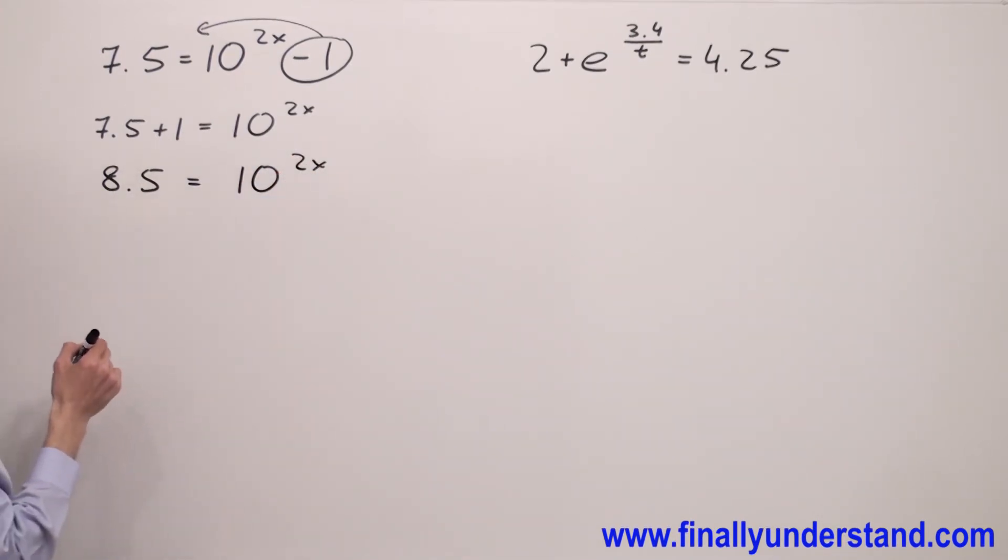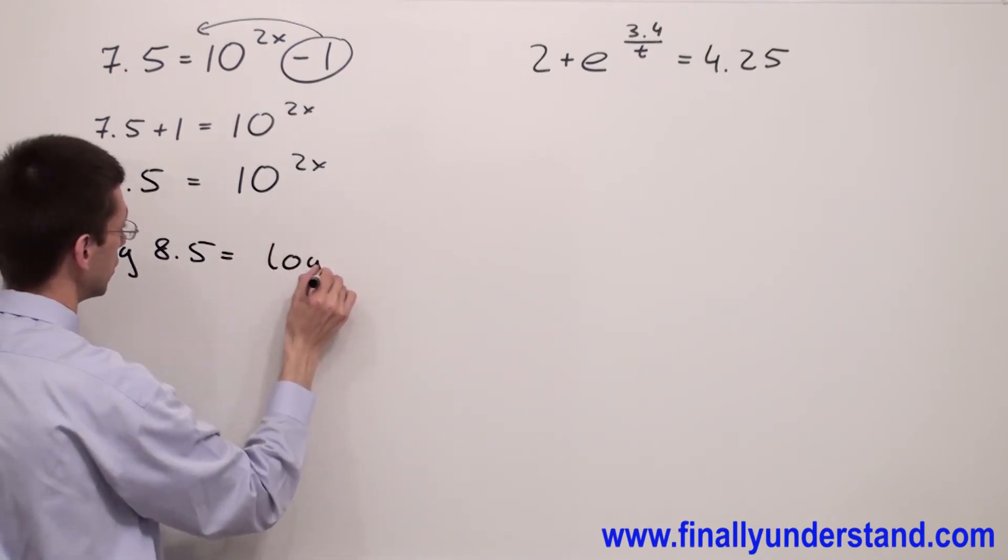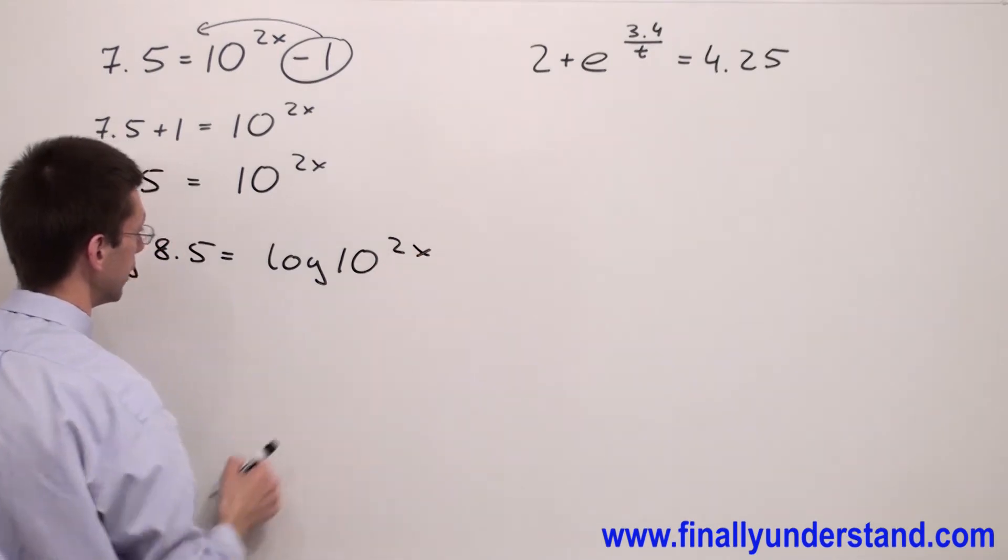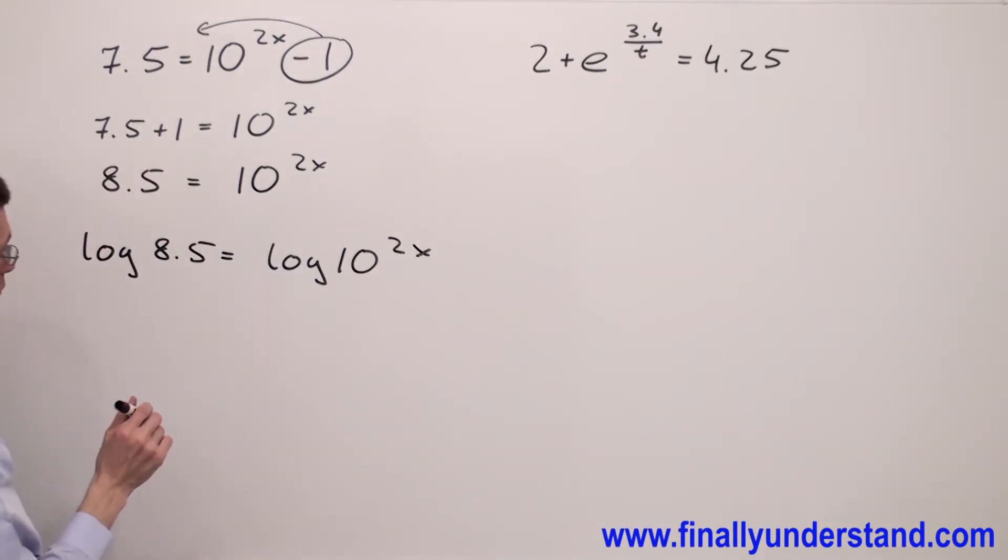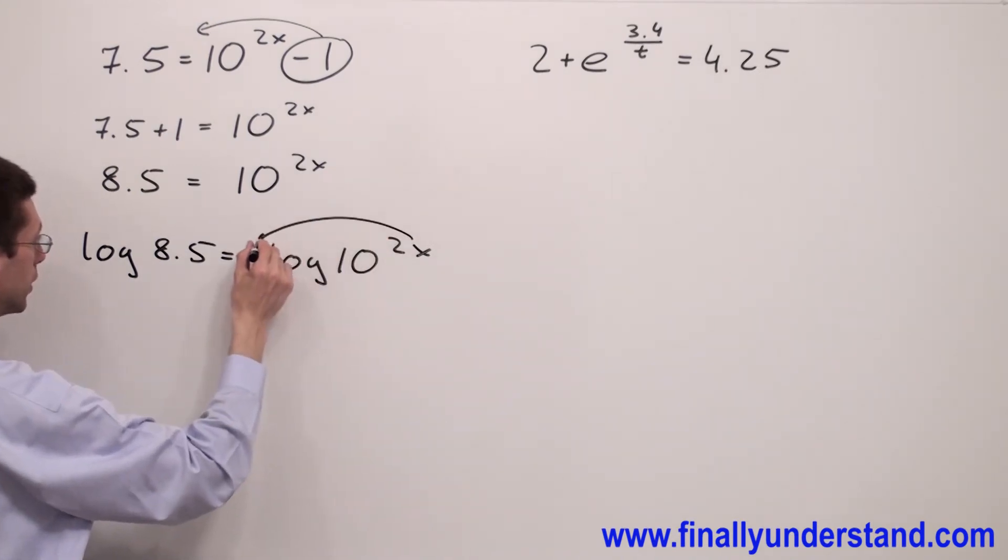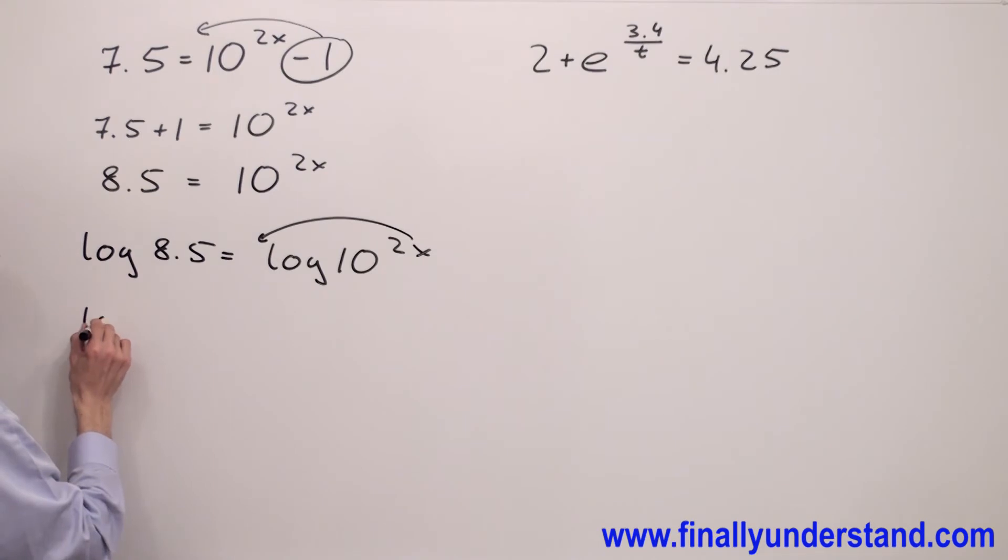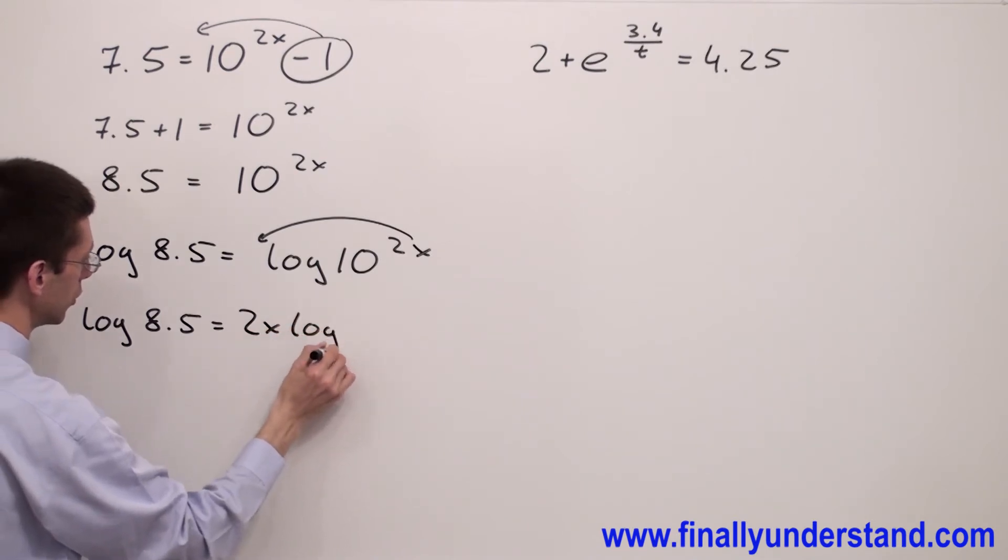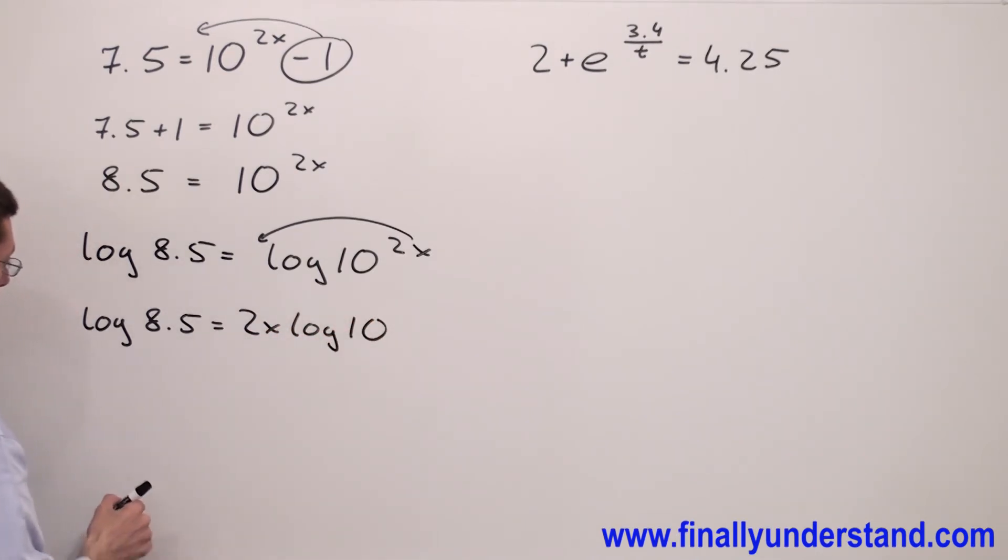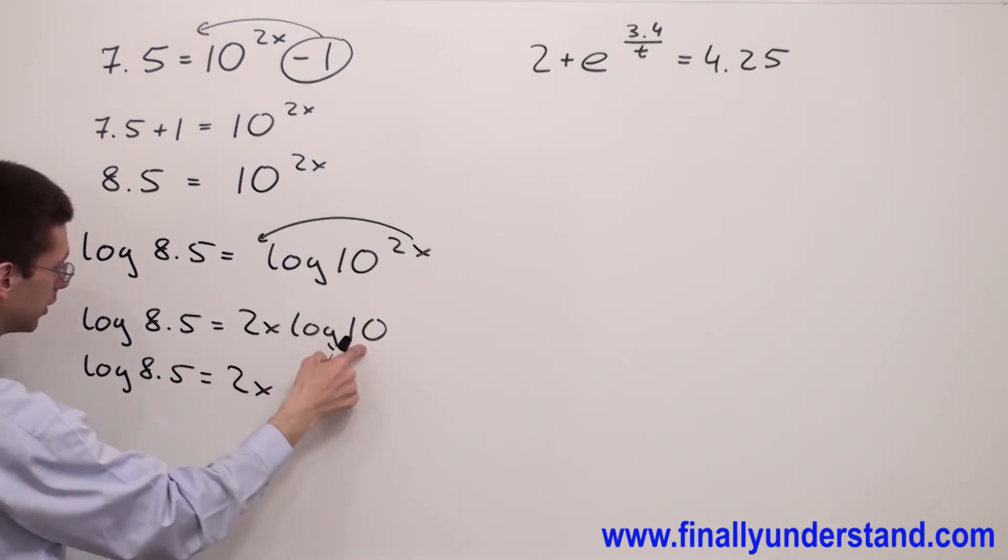We said we have to use the common logarithm because the base is 10. Log 8.5 is equal log 10 to 2x. Next, I'm supposed to use the property for the log of power and bring this exponent to the front of the logarithm. And you will have log 8.5 is equal 2x log 10.